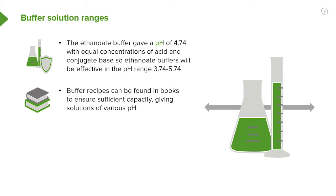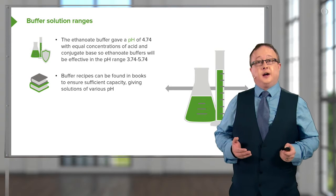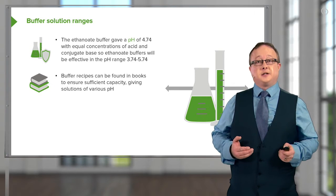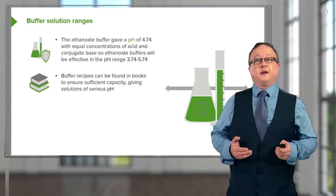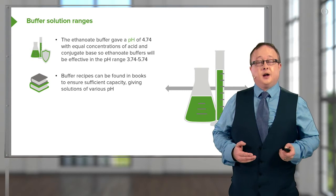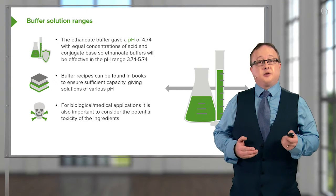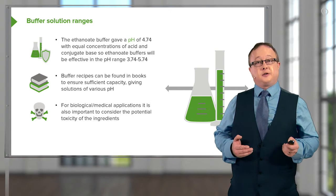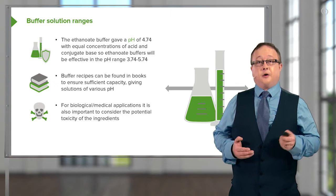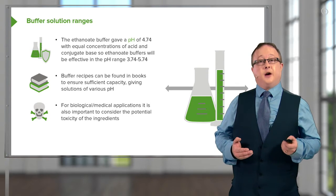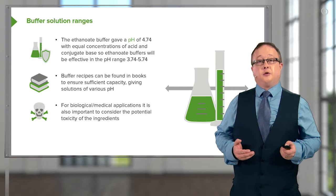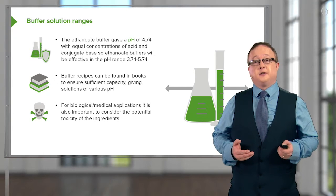Buffer recipes can be found in books to ensure sufficient capacity given solutions of varying pH. Obviously, what I just showed you was an acetic acid and sodium acetate buffer, which gives a relatively acidic pH buffer. When you're looking at biological and medical applications, it's also important to consider the potential toxicity of the ingredients. That's one of the reasons for the use of TRIS or HEPES buffer, and also, if you require it, some of the higher pH buffers like borate.